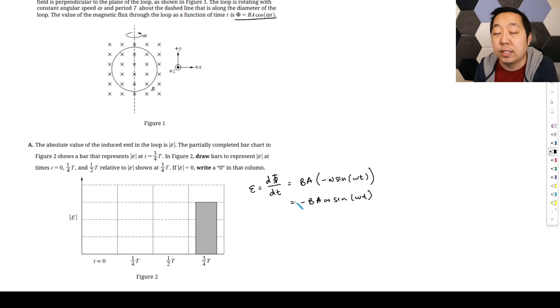So this becomes negative BA omega sine of omega T. And again, I don't care about the negative sign because I just care about the absolute value. So the magnitude is just going to be BA omega sine of omega T. Now if you look at this expression, they're saying at T, if you look at what's happening here, this is going to be the maximum. This is the max EMF, and that occurs at specific points in here.